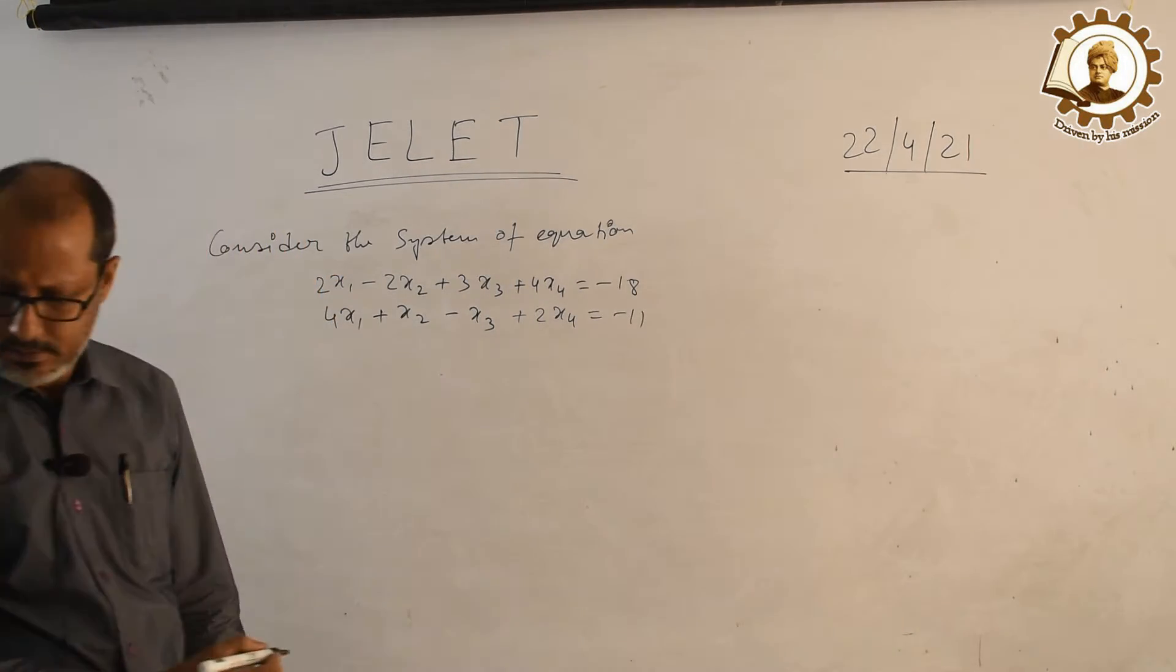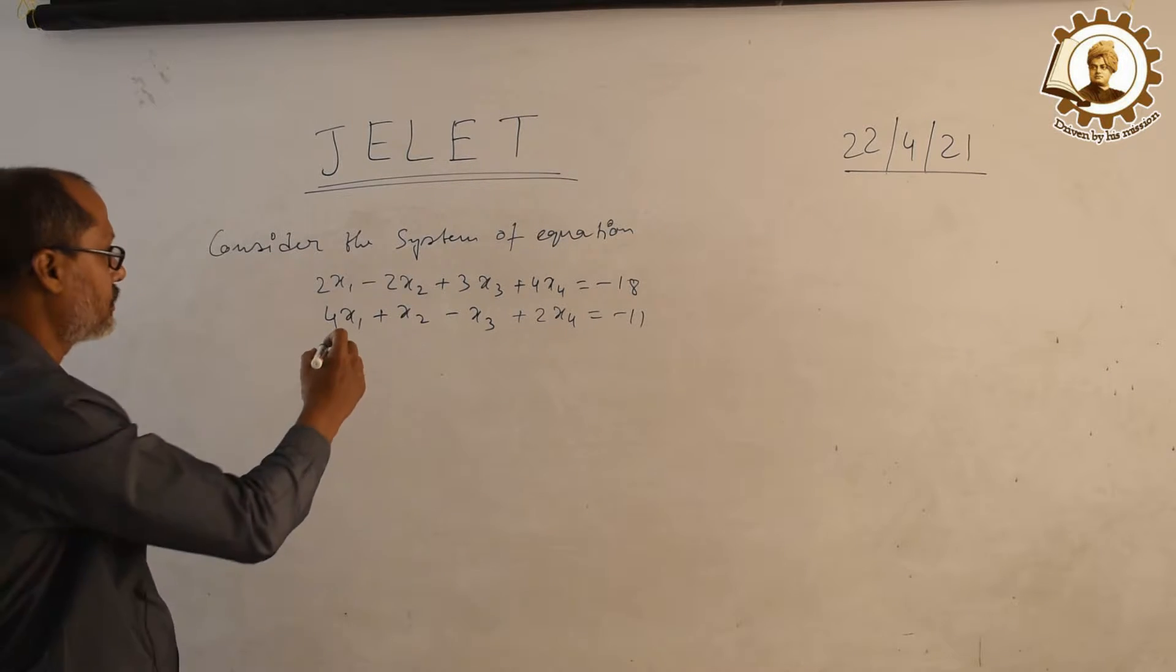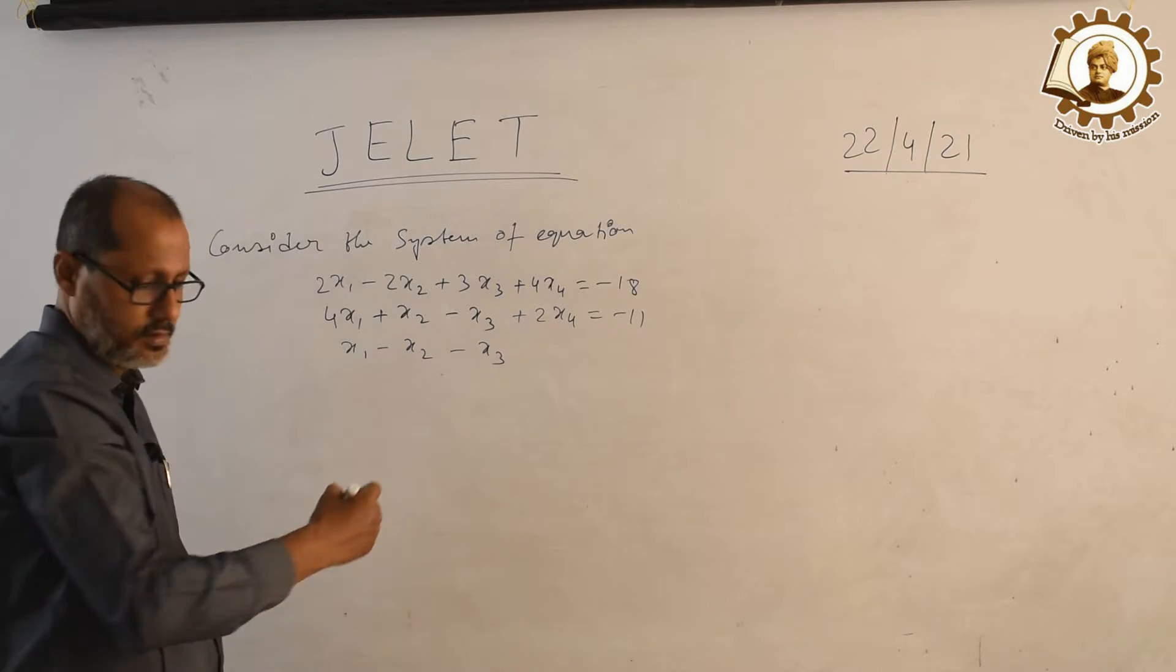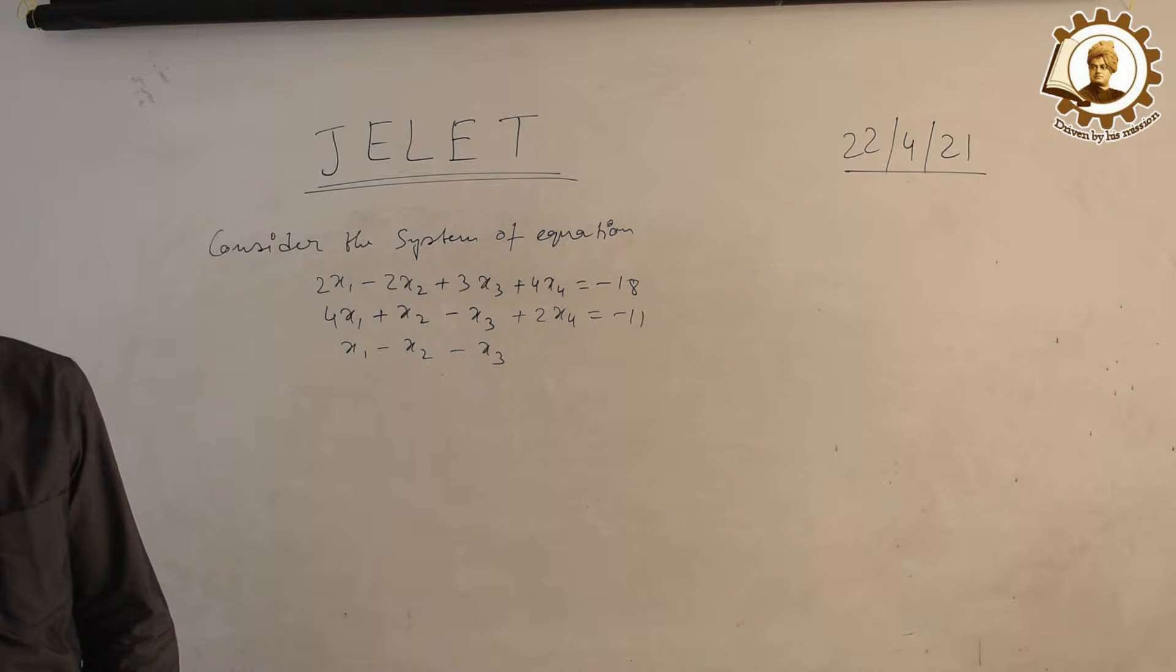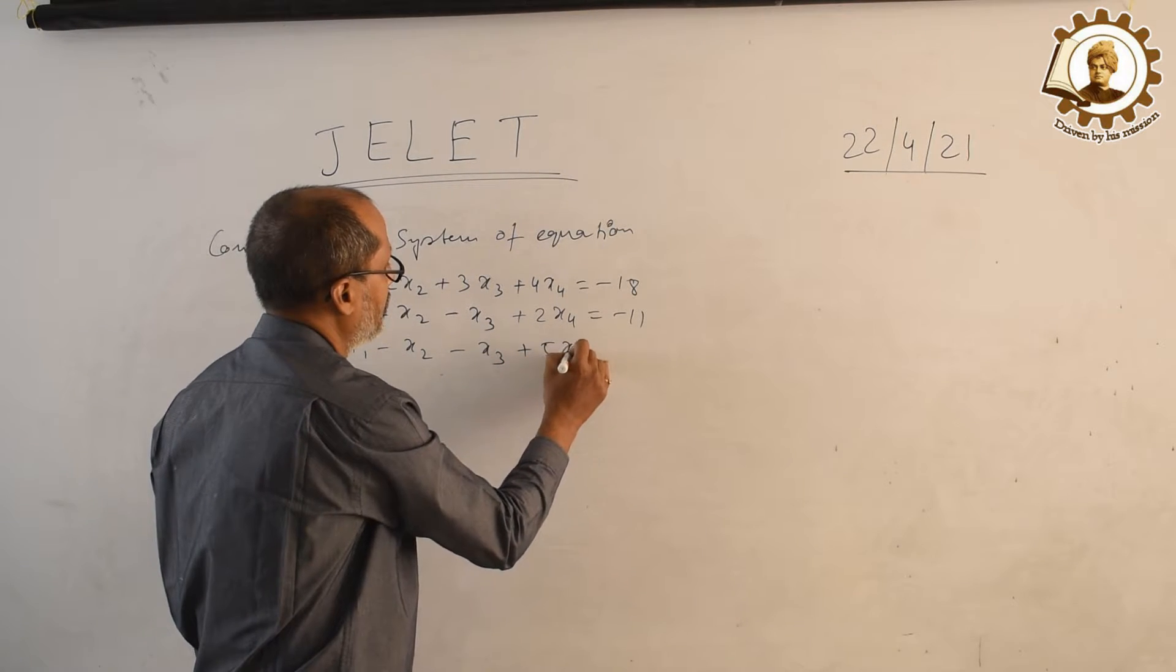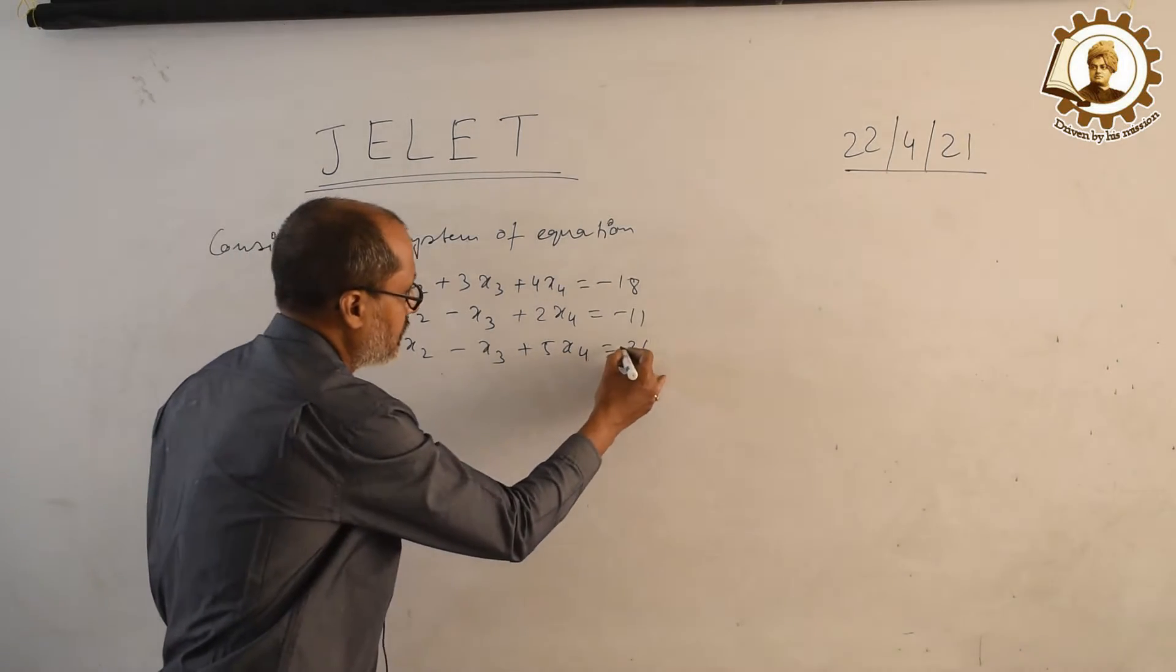x1 minus x2 minus x3 plus 2x3 plus 5x4 equals minus 26.